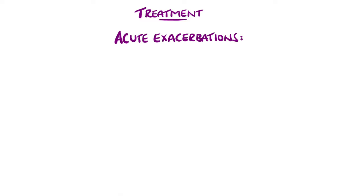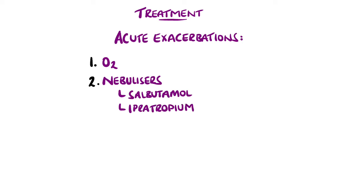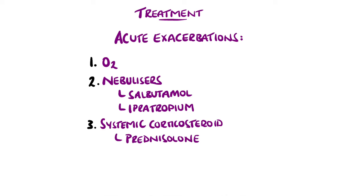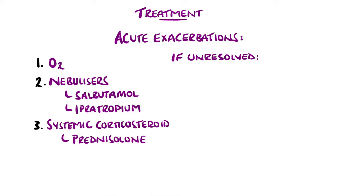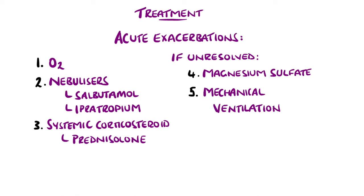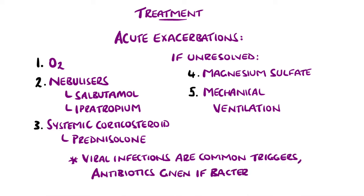For acute exacerbations, oxygen is usually given, and relieving therapies like short-acting beta-2 agonists and anticholinergics like ipratropium are used via nebulizers. Systemic steroids, typically prednisolone, are also used. If these measures do not resolve the exacerbation, intravenous magnesium sulfate is another option, but in severe cases mechanical ventilation may be required. Viral infections are more commonly the trigger for acute exacerbations; however, if a bacterial cause is suspected, antibiotics are started.